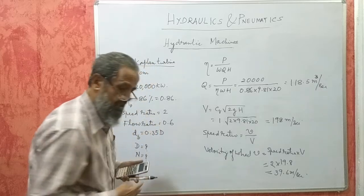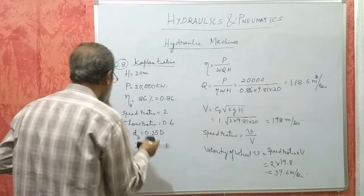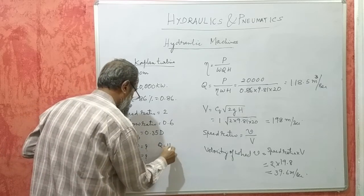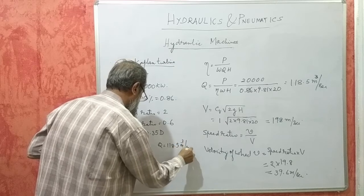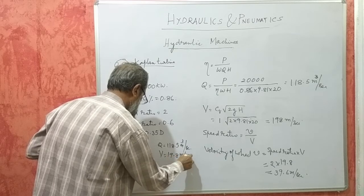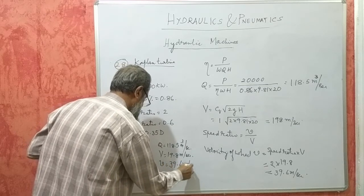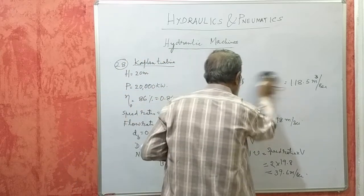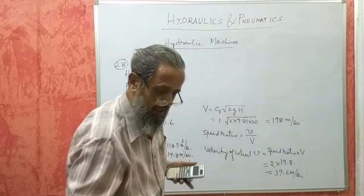So I have got Q, V and small v. Q is 118.5 cubic meters per second, capital V is 19.8 meters per second, small v is 39.6 meters per second.